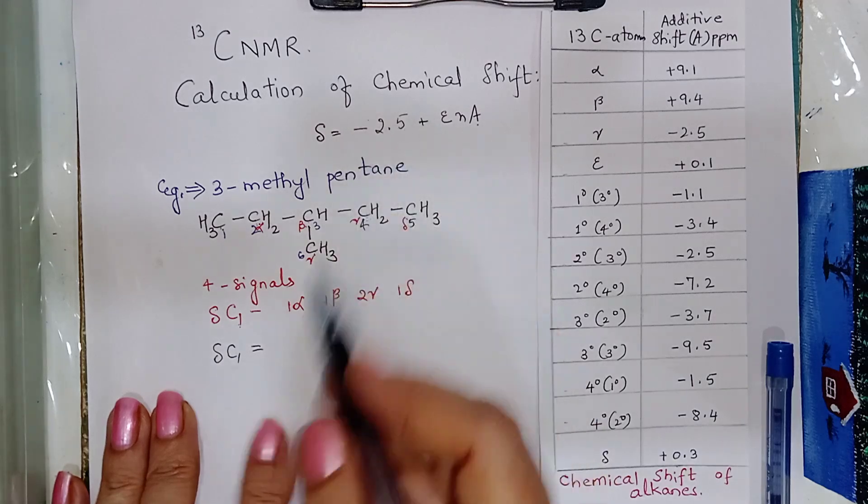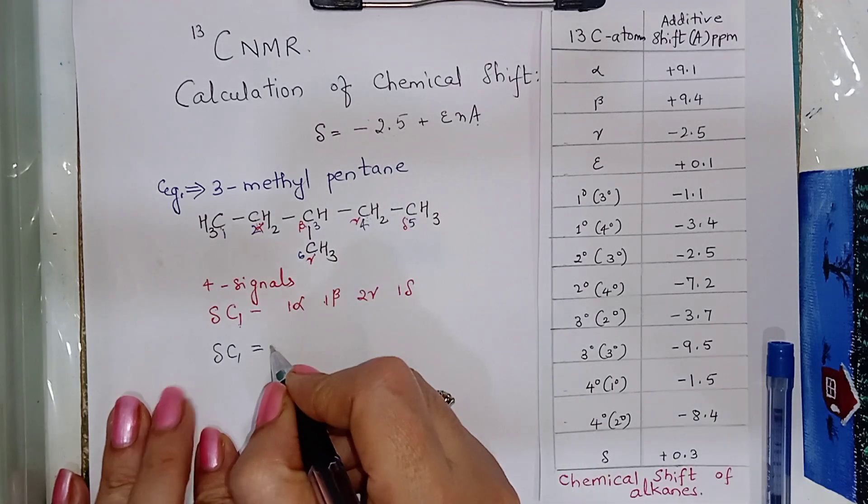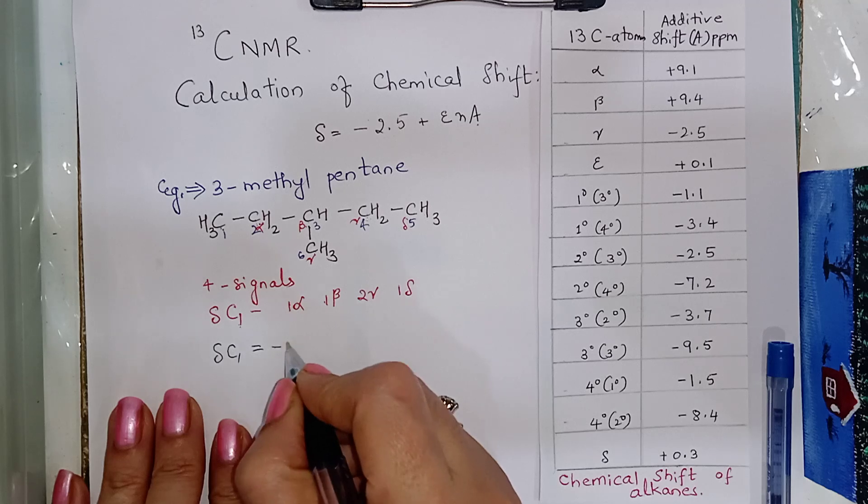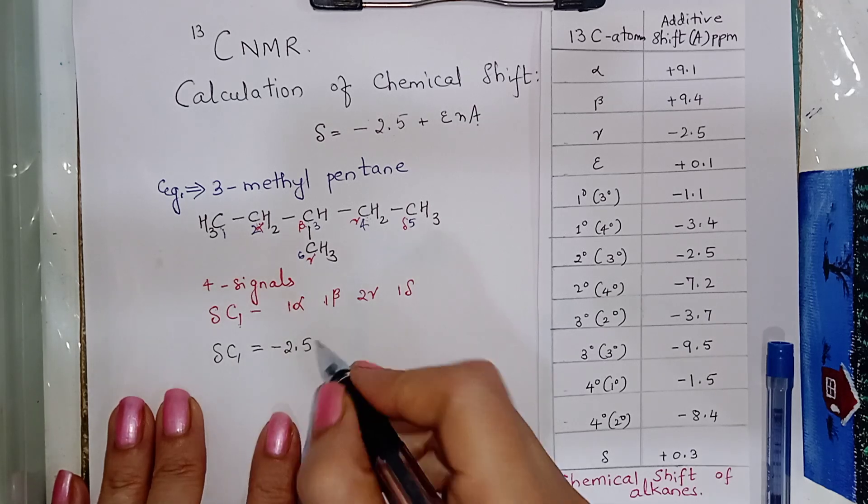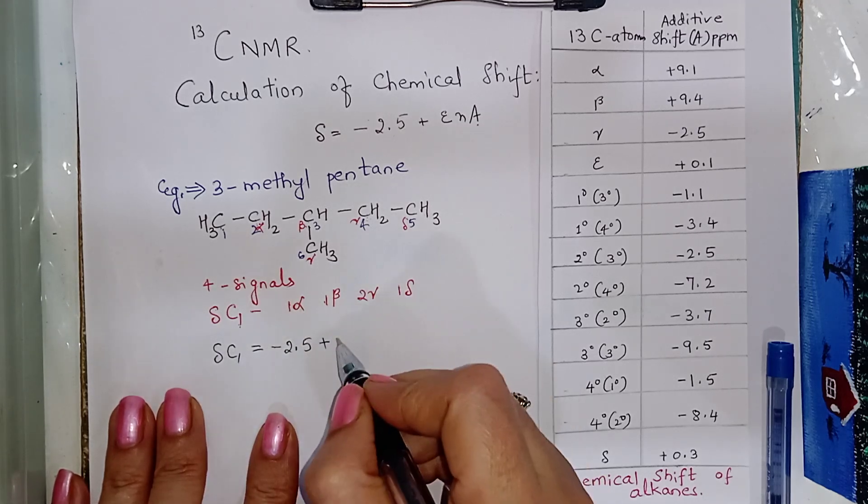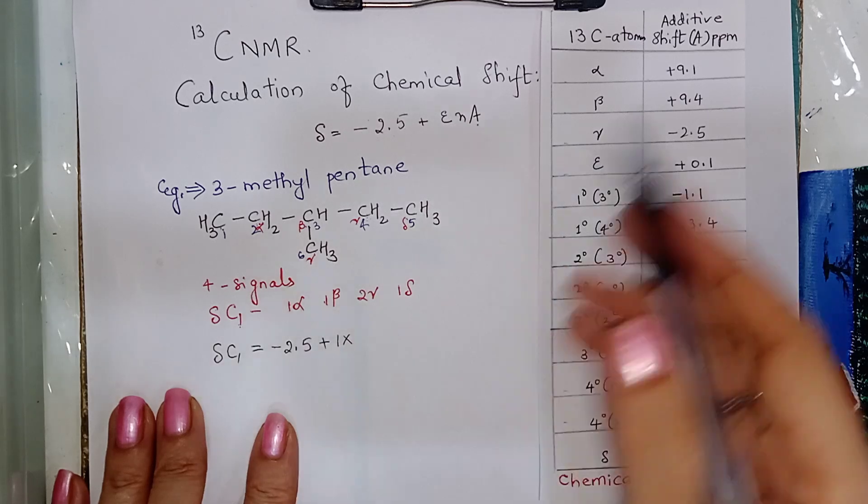Therefore, chemical shift of carbon 1 will be equal to 1 alpha carbon. Alpha carbon has 9.1. First, we will add this base value that is, we have to add the base value that is minus 2.5 plus 1 alpha carbon. 1 into alpha carbon is plus 9.1 plus 1 into beta carbon is 9.4